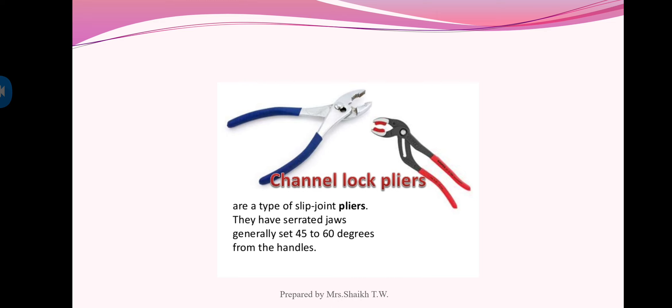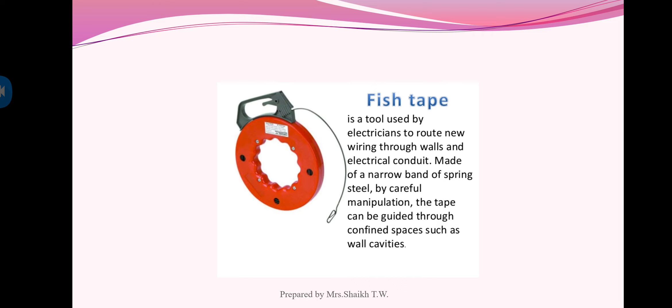Next is fish tape. It is tool used by electricians to route new wiring through walls and electrical conduit. Made up of narrow band of spring steel. By careful manipulations, the tape can be guided through confined spaces such as wall cavities.